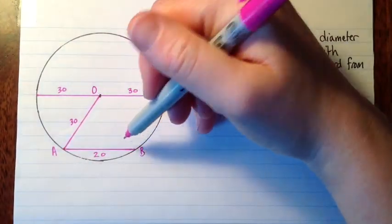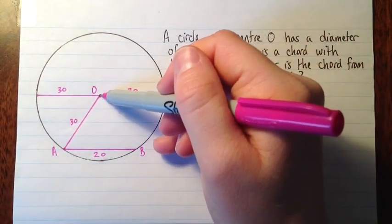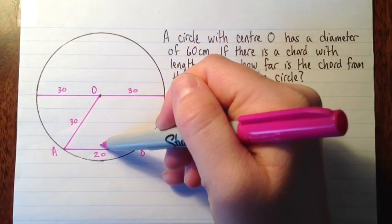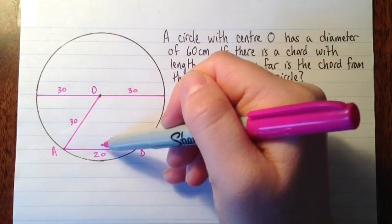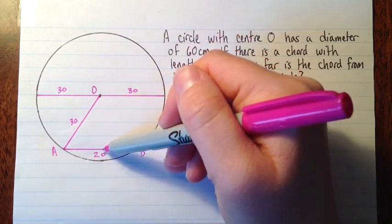We could also draw in OB, but I don't think we'll need it. So the question is how far is the chord from the center of the circle? That means how far is it from O down and perpendicular to the chord. The distance from a point to a line, the shortest distance, is always going to be perpendicular to the line.